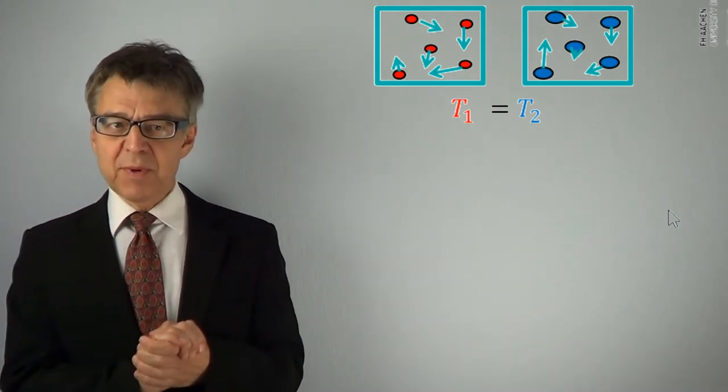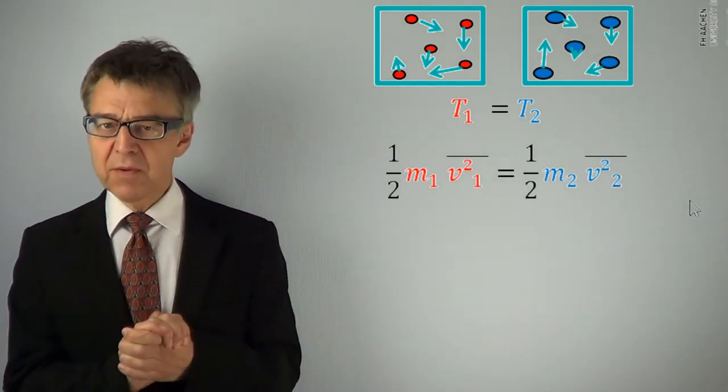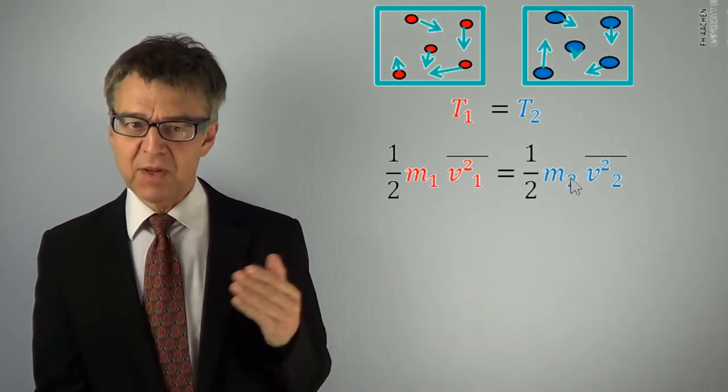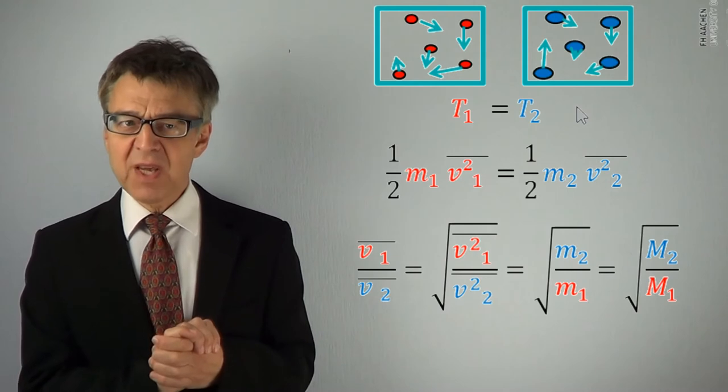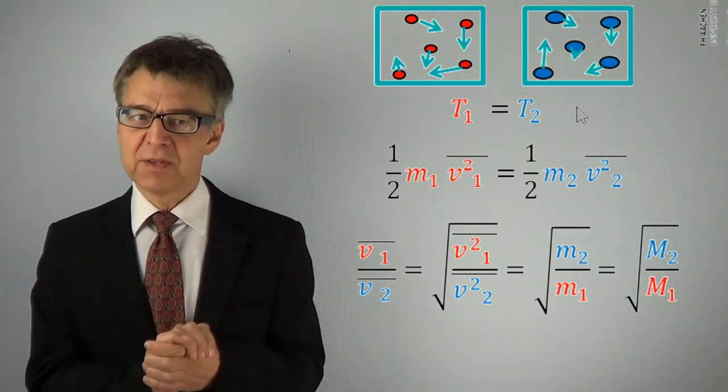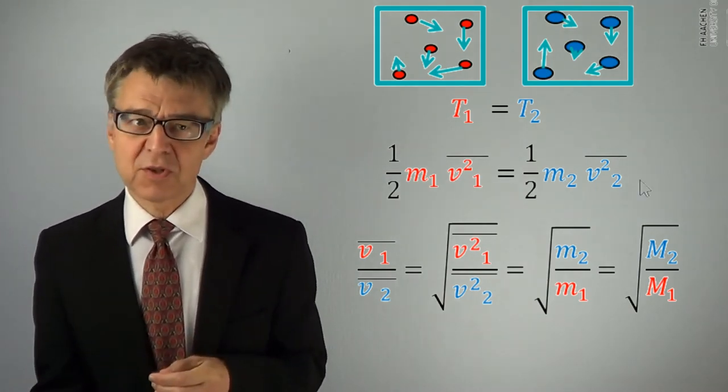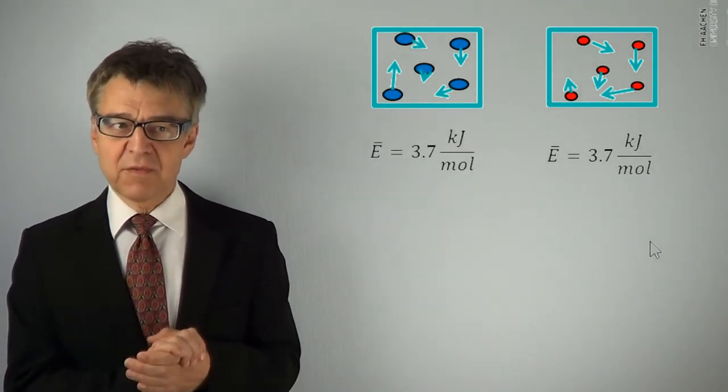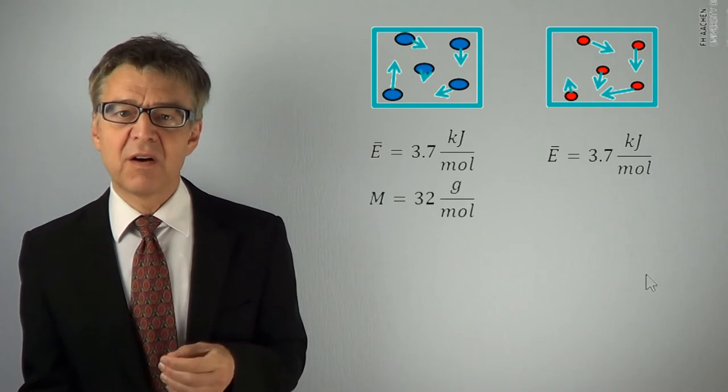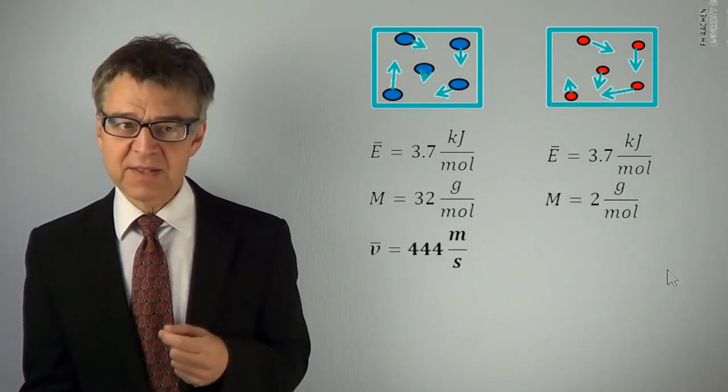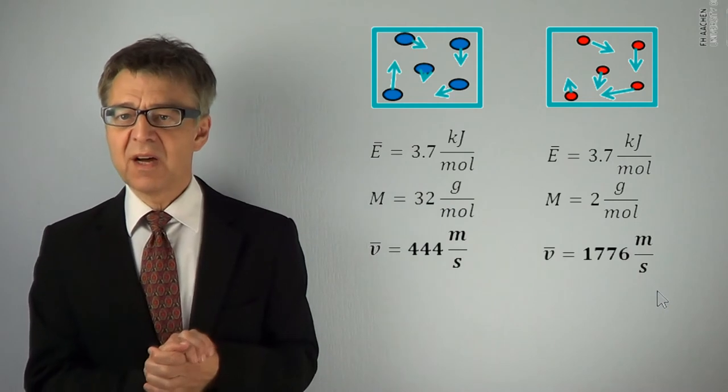Kinetic energy can be expressed as one-half times m times v squared. If this has to hold for both gases, there must be a mathematical relation between the velocities and the masses. We arrive at Graham's law, which states that the mean velocities are inversely proportional to the square root of the masses. Because the mass of hydrogen is 16 times smaller than the mass of oxygen, the average velocity of hydrogen is 4 times larger than the average velocity of oxygen. Oxygen has an average velocity of 444 m per second. Hydrogen is faster than 1,700 m per second.